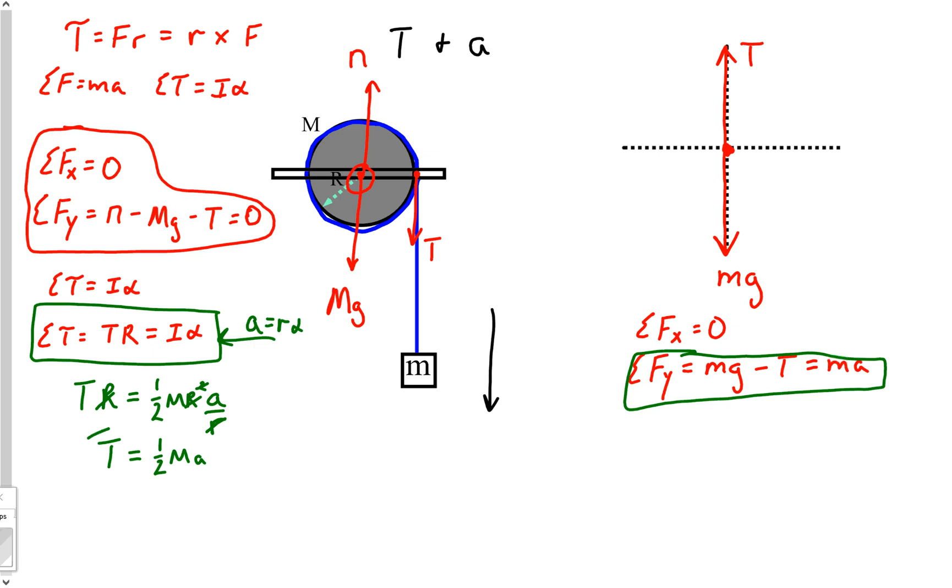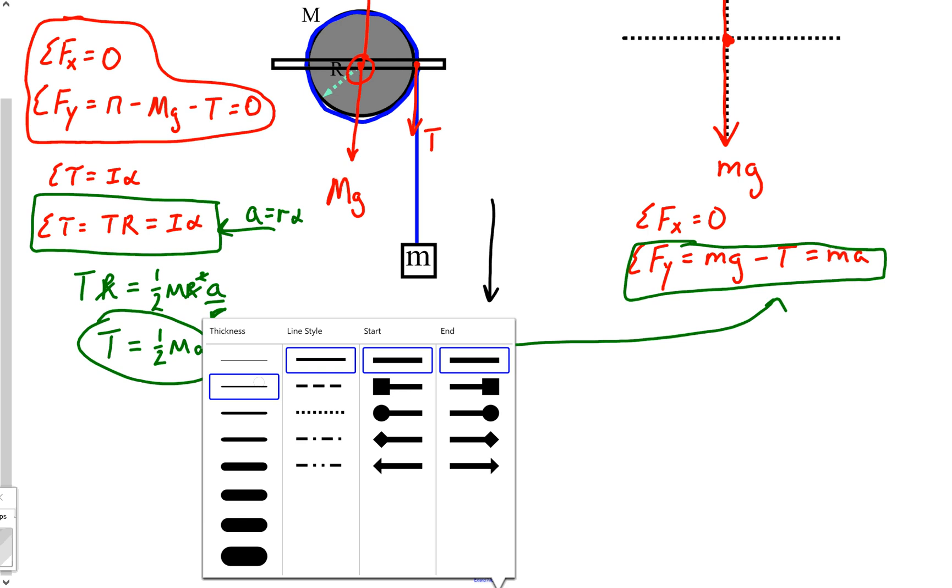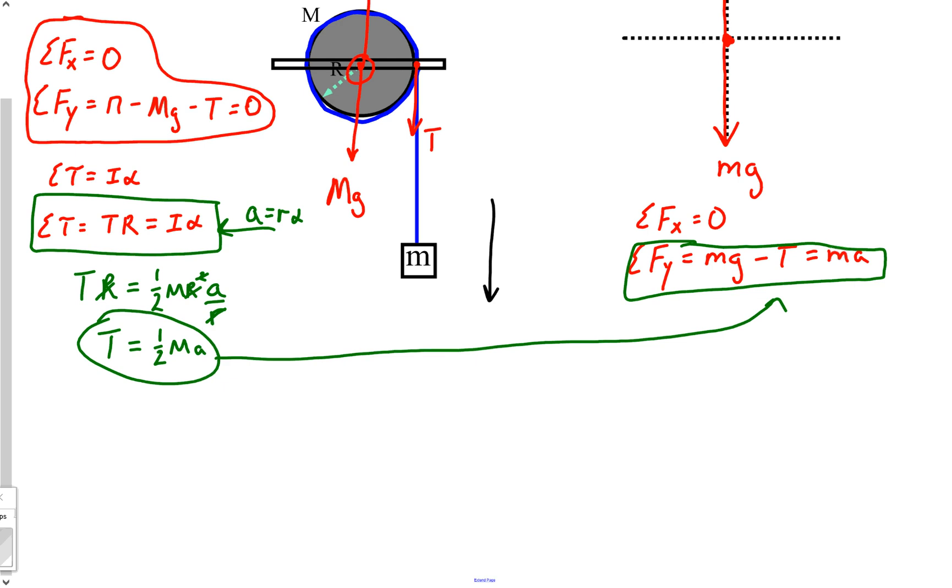And so the only thing that's really left to do is to take this guy and substitute it in over here. So let's go make that substitution. Hey we haven't used blue ink yet, let's use blue ink, blue is exciting. So we know that mg minus, now substituting in for T, one half M a is equal to ma.